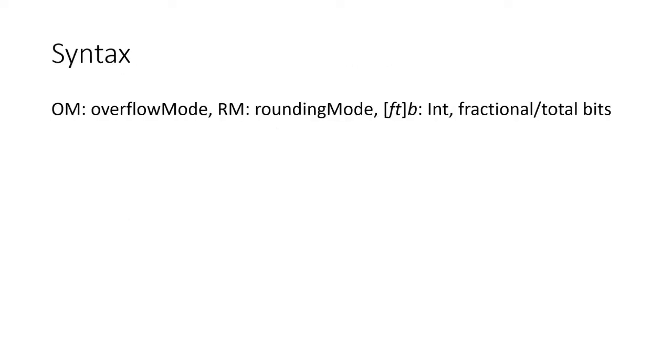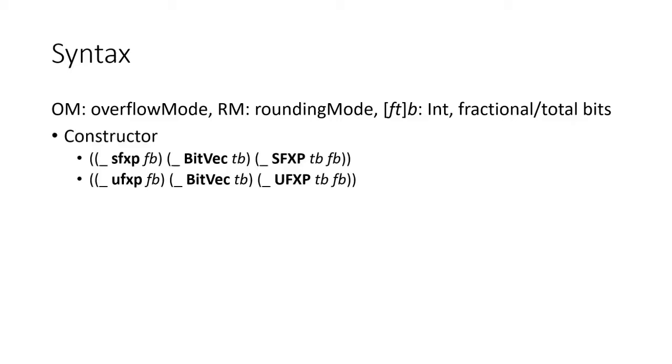Here, OM denotes an overflow mode sort which can be either wraparound or saturation. RM is a rounding mode sort and can be either round up or round down. FB and TB are integers and denote the number of total bits and fractional bits respectively. The constructor allows us to create constants with TB total bits and FB fractional bits. Here, the S and U in the function name and sort name denote whether a sort is signed or unsigned. We will omit the unsigned syntax for brevity.